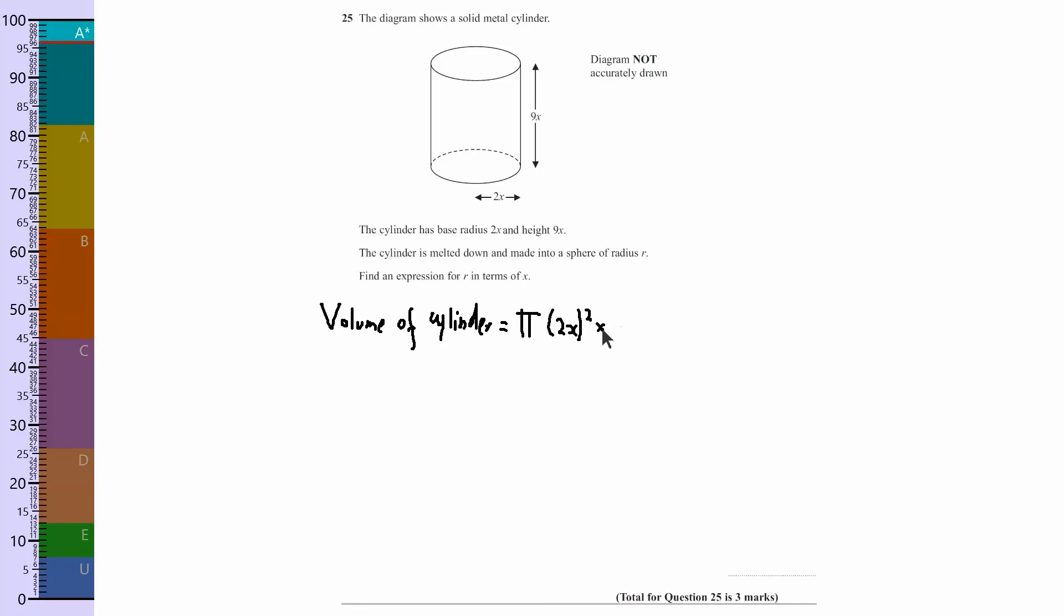And then we're multiplying it by the length, so times 9x. Now, the tempting thing to do here is write 2x squared, but it's both of these that are squared, it's the 2 and the x, so it becomes 4x squared times 9x.